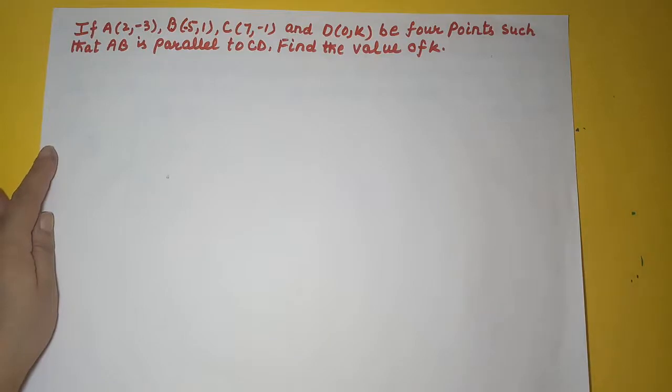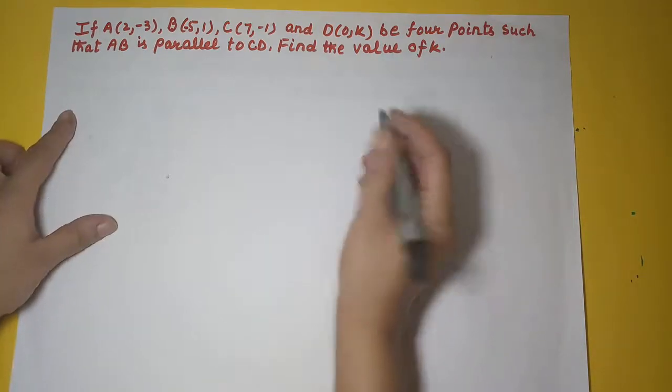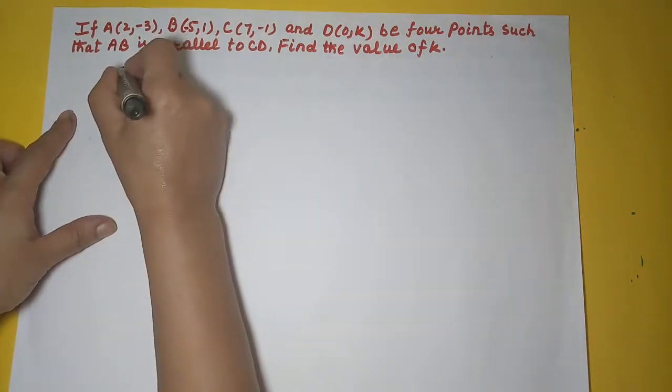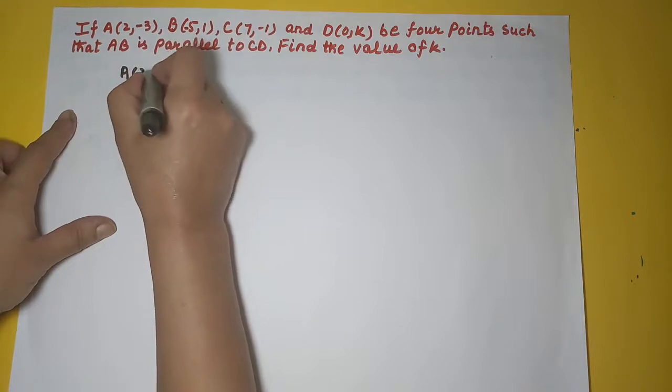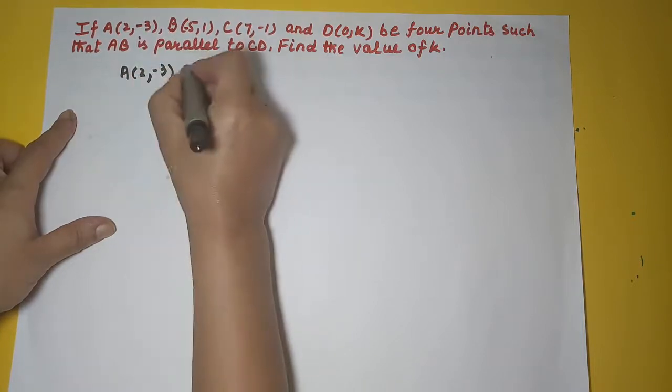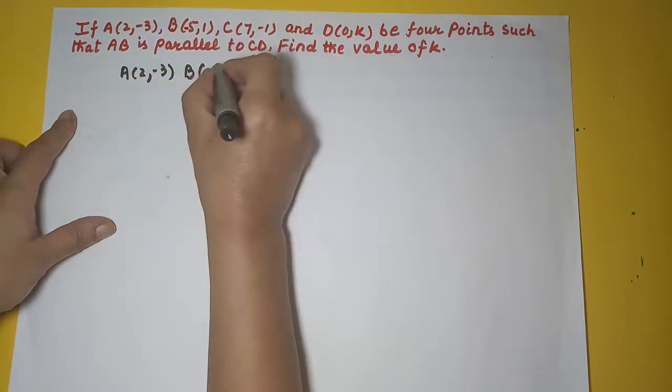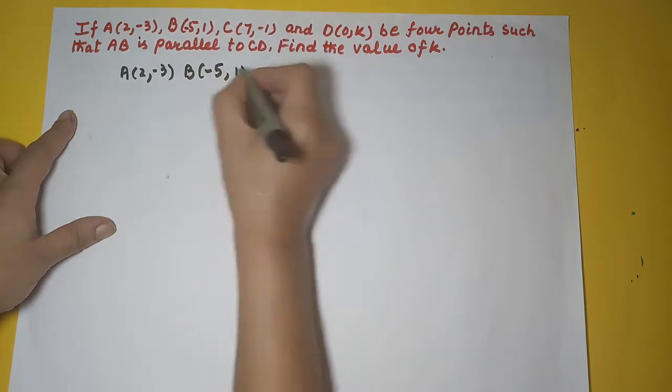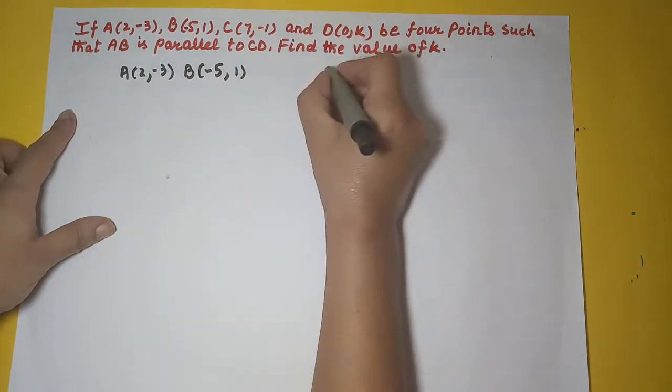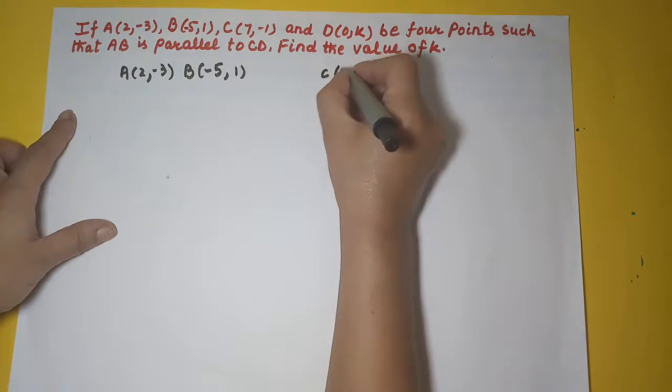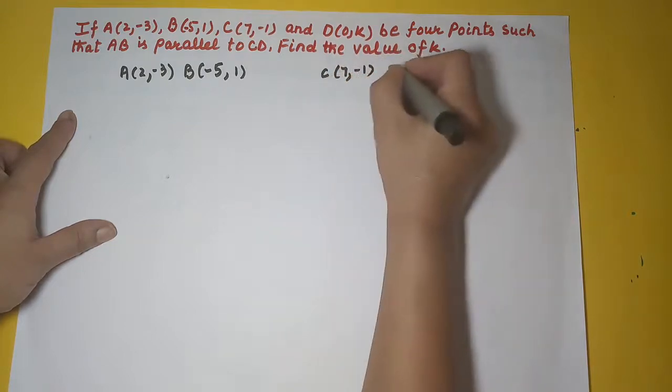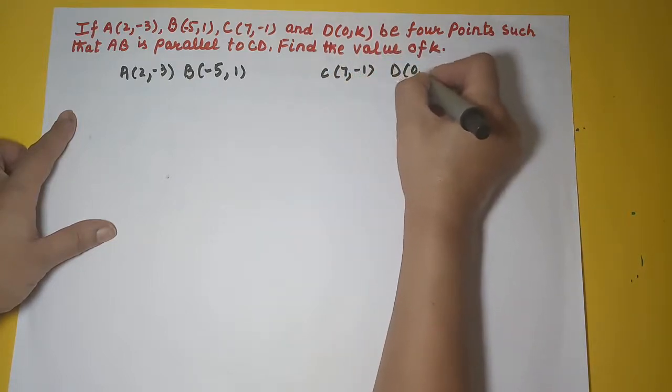So when are two lines parallel? Only if their slopes are equal. We have four points: A which is 2 and minus 3, B which is minus 5 and 1, then we have C which is 7 and minus 1, and we have D, 0 and K.